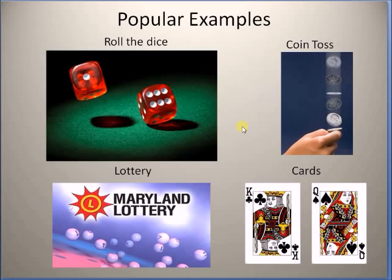Popular examples for understanding probability: the first is dice, where you roll a couple of dice and have 36 possible outcomes — each outcome is equally likely. The next is the coin toss experiment, where you get either heads or tails, and the probability is one-half because there are only two possible outcomes. Another example is the lottery — if you have millions of people buying lottery tickets, the probability of winning is one divided by the total number of buyers. And of course, the most popular example is cards. There are 52 cards and the likelihood of each card is one in 52. If you fix the color, the likelihood changes to one in 26.